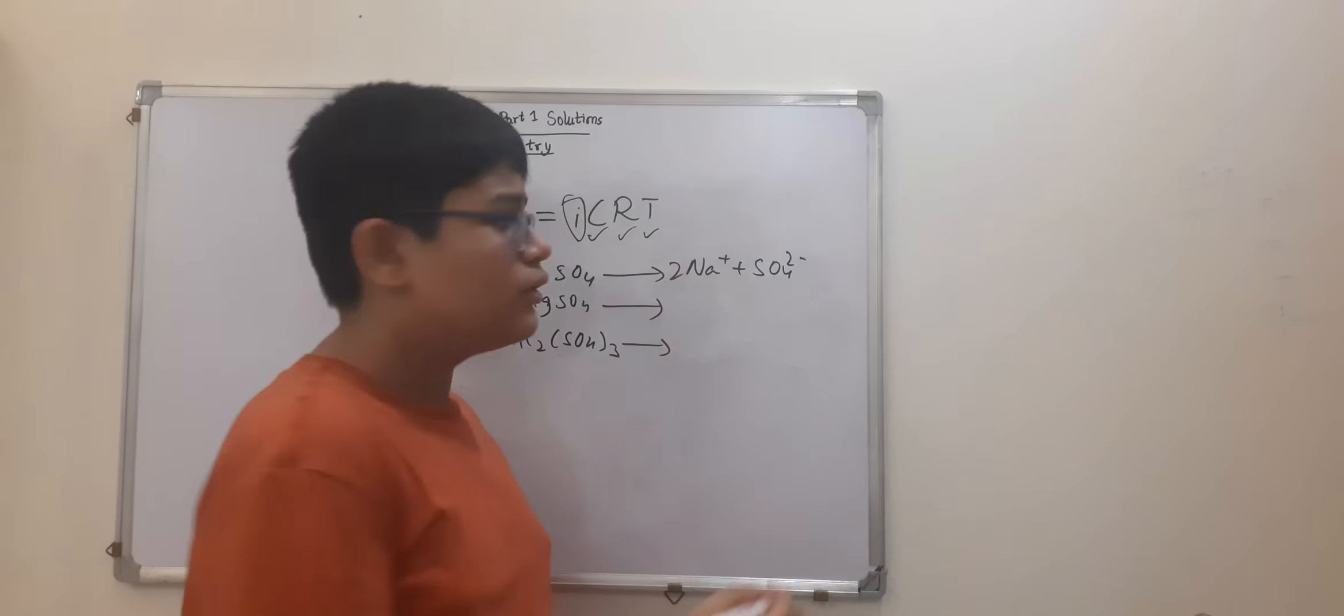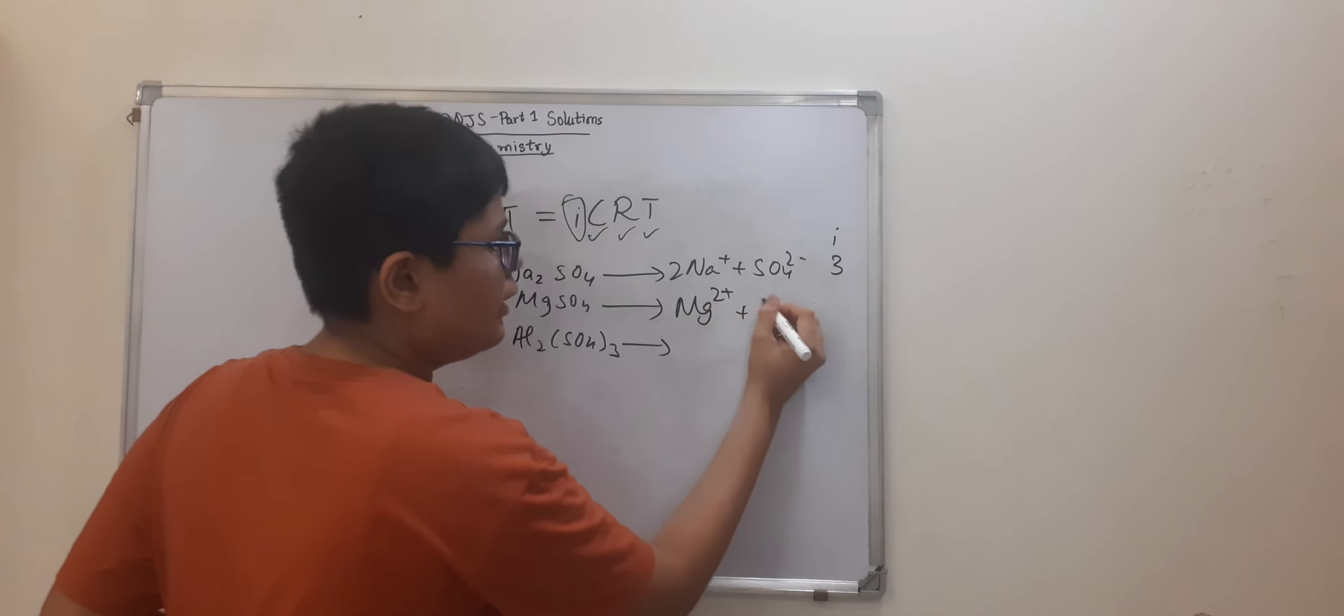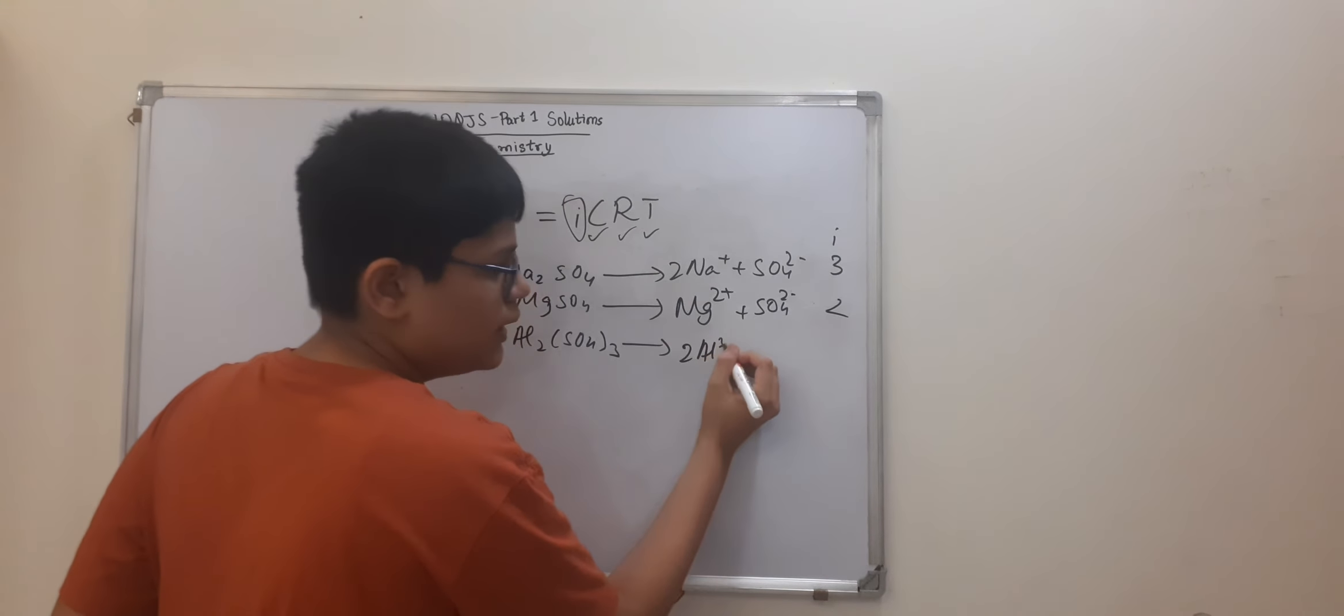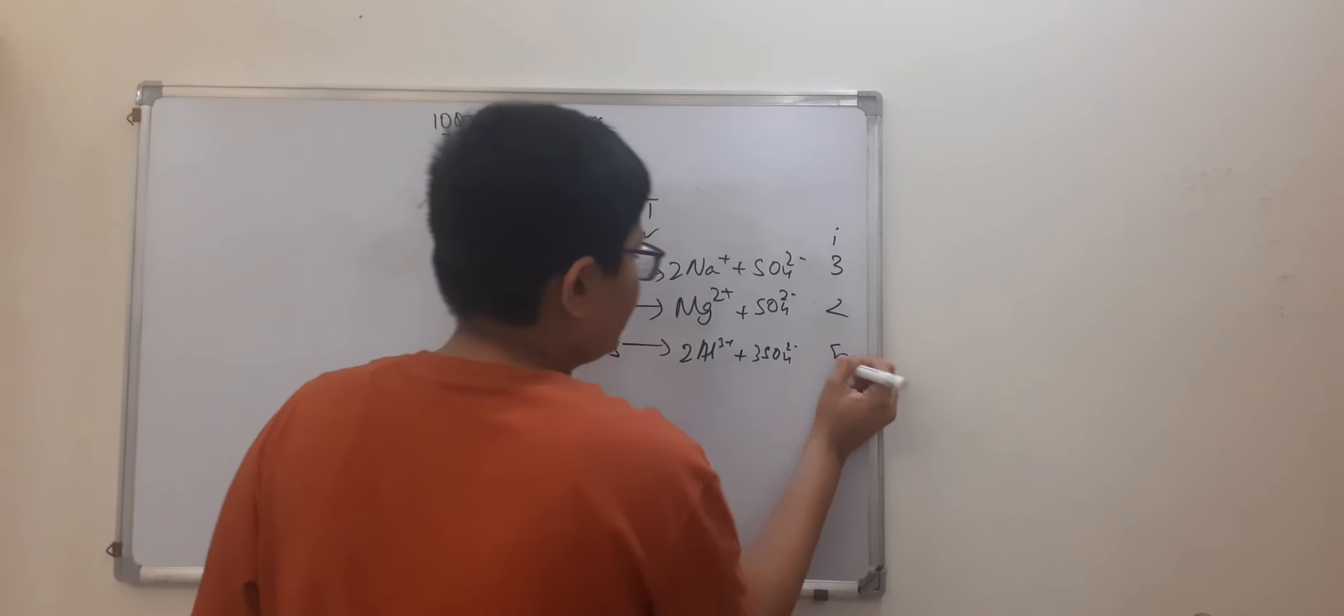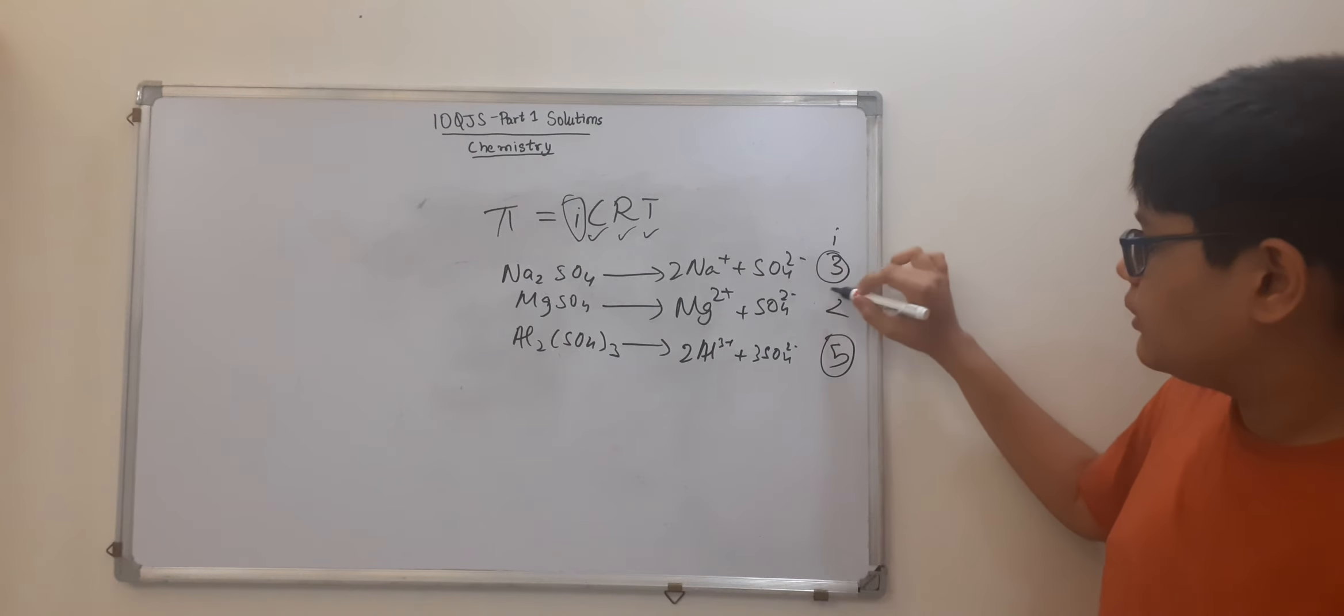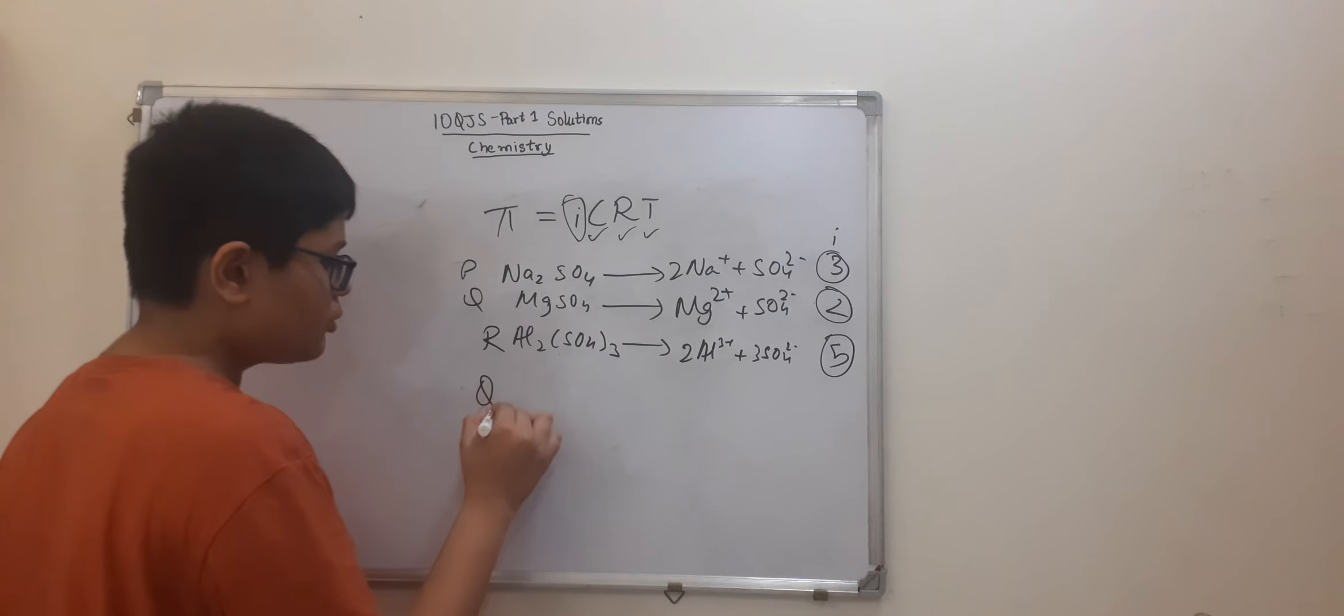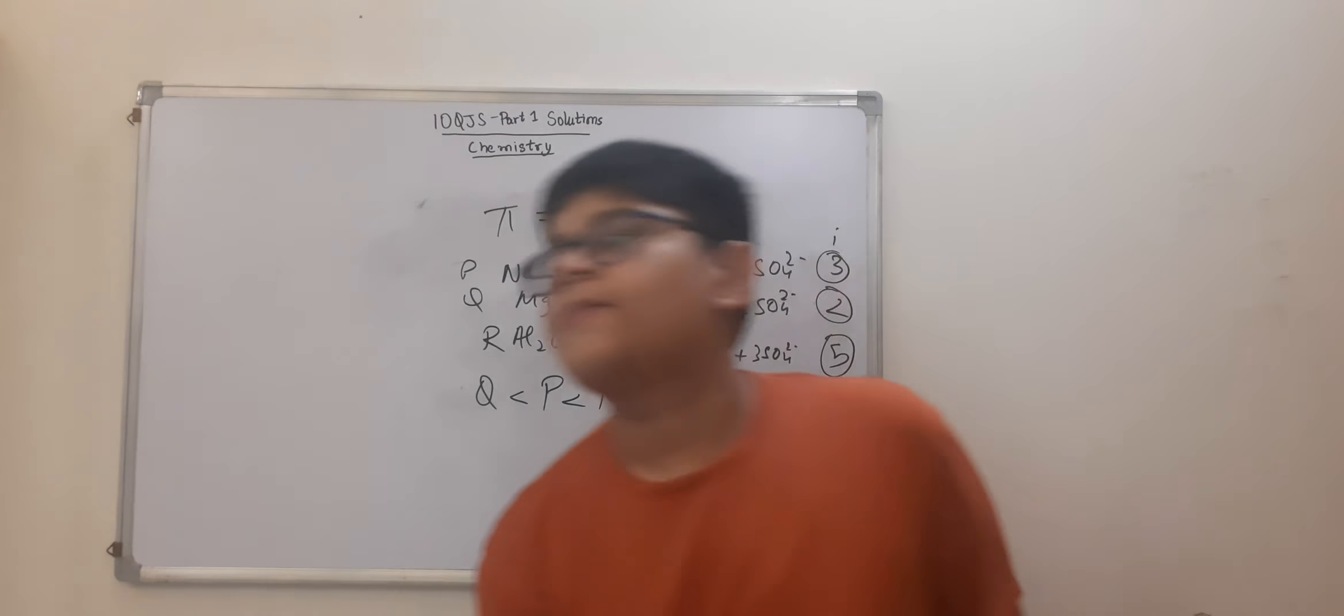When these decompose, this will give 2 Na plus and SO4 2 minus. That is, it gives 3 ions. 2 Na and 1 SO4. So the I will be 3. Similarly, here it will be Mg2 plus and SO4 2 minus. So the I will be 2. And here it will be 2 Al3 plus plus 3 SO4 2 minus. So the I will be 5. Because there are 5 ions. 2 plus 3. Now, since Al2(SO4)3 has the highest I, and then this and then this. So basically this was P, this was Q, and this was R. So clearly we can say that the osmotic pressure of Q is less than that of P and it is less than that of R. So Q less than P less than R. So that will be the correct answer. So option B.